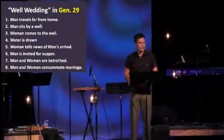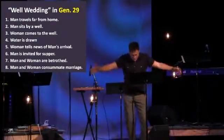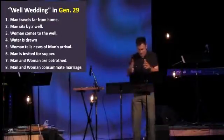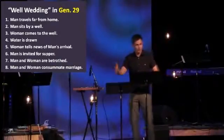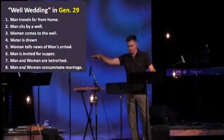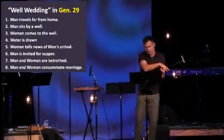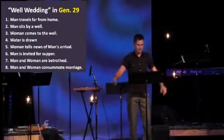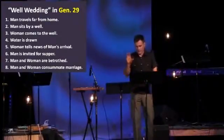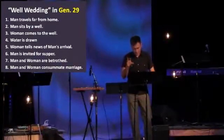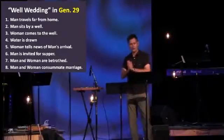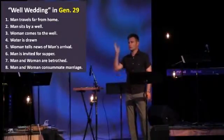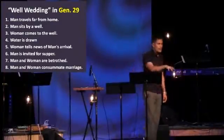When morning came, there was Leah. Jacob said to Laban, 'What is this you've done? I served you for Rachel! Why have you deceived me?' Laban replied, 'It's not our custom to give the younger daughter in marriage first. Finish this daughter's bridal week and I'll give you the younger one also, in return for another seven years of work.' Jacob did so, finished the week with Leah, and then Laban gave him Rachel to be his wife as well. Jacob made love to Rachel also — the man and two women consummate the marriage.